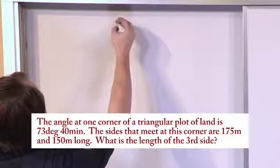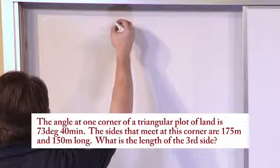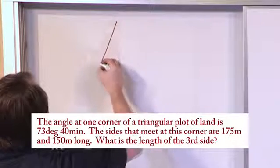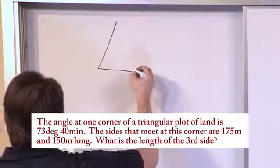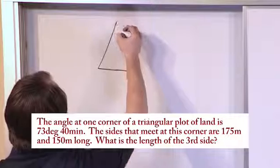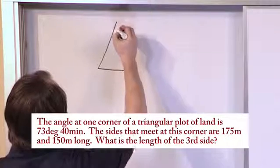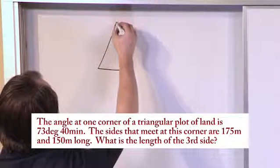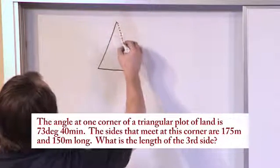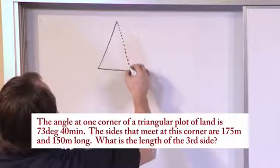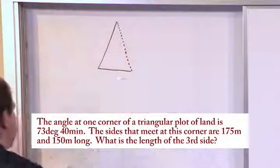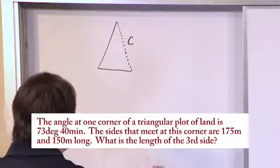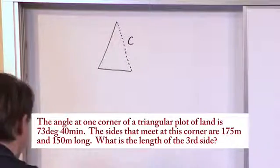We have a triangular piece of land, and it's going to roughly look something like this. We're given two pieces of information, and the third side is unknown. I'll put a dotted line there and label that side C — that's what we're trying to solve for.